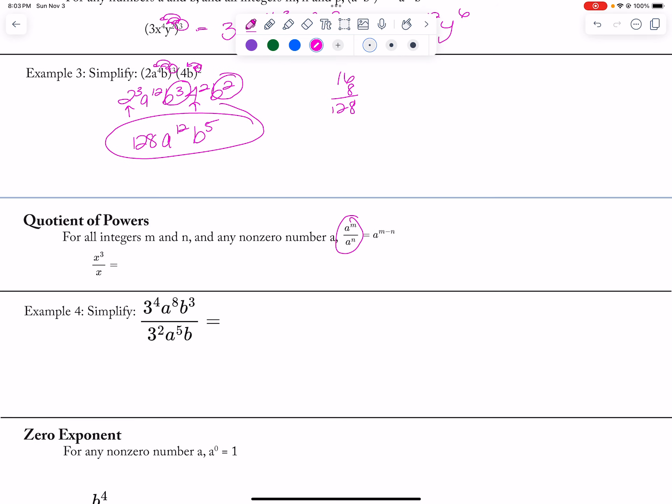Quotient: if I have the same base, then I subtract the exponents, so this is 8x to the 3 minus 1, which is x squared.